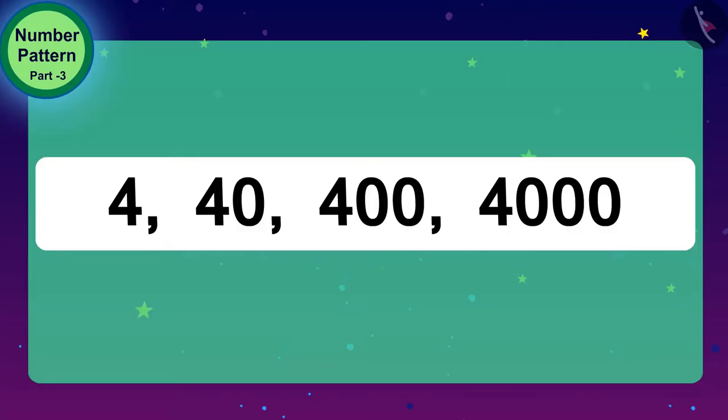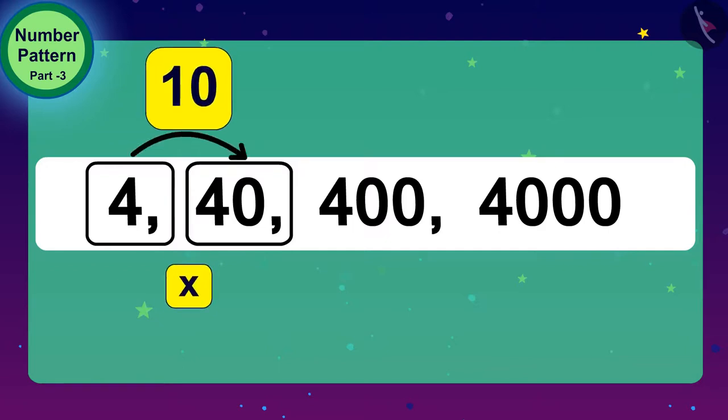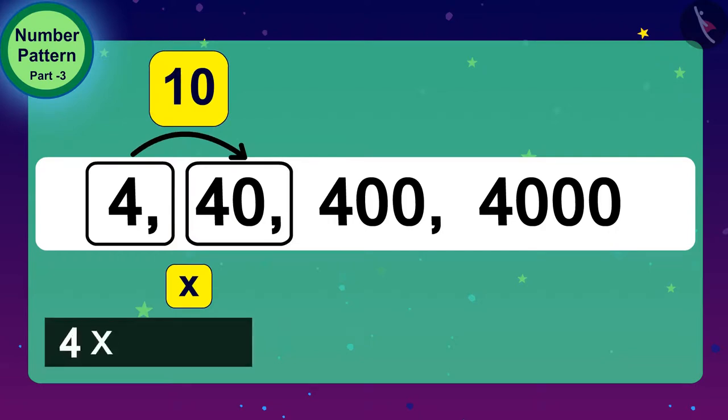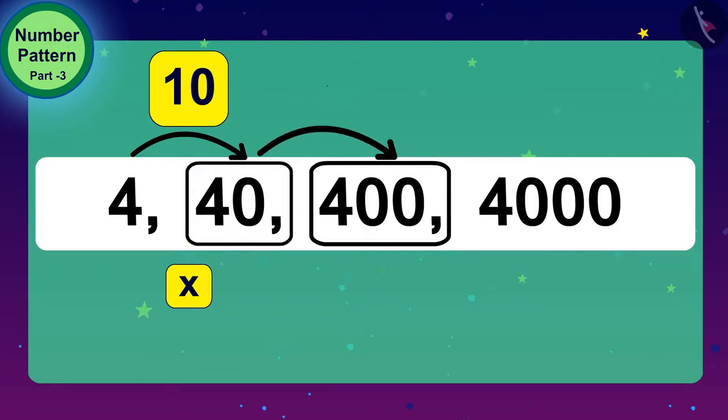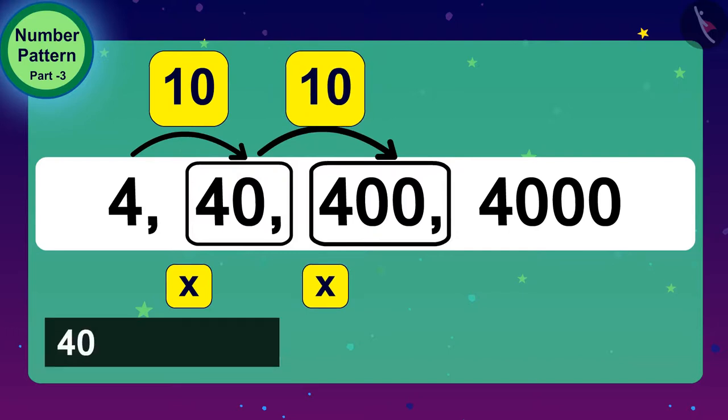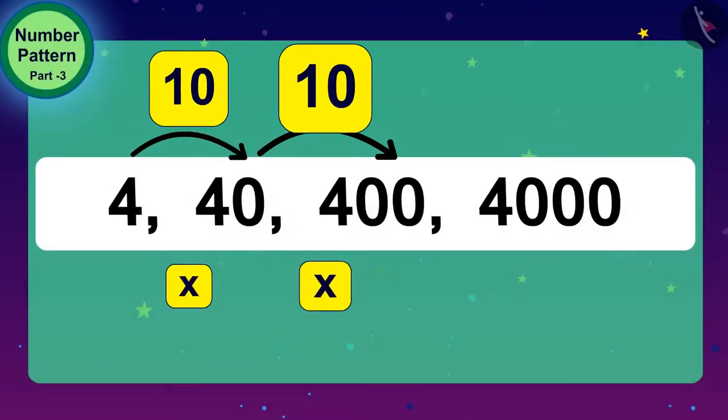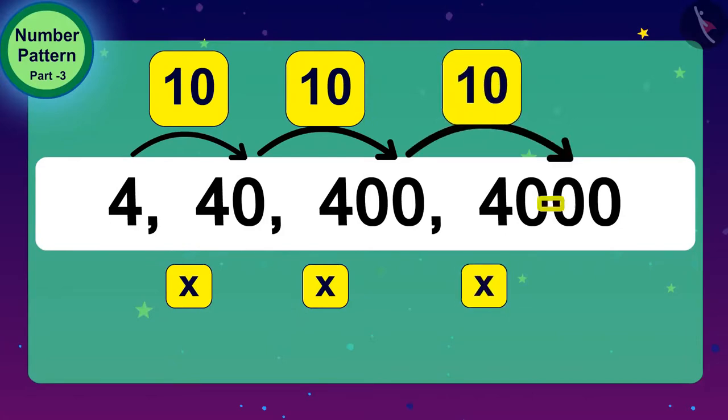The first number here is 4. If we use the process of multiplication, we will find what we need to do to get the number from 4 to 40. Exactly! We have to multiply 4 by 10. Let us now look at the next number. 400. What do we have to do to get a number from 40 to 400? Yes! 40 has to be multiplied by 10 once again. Oh wow, children!